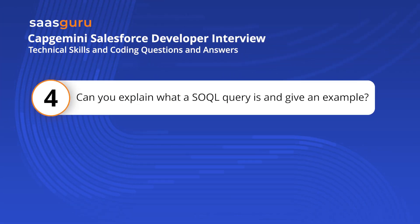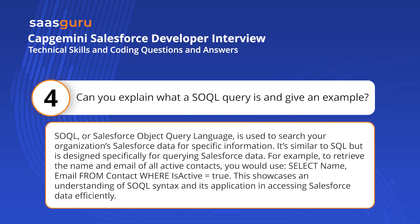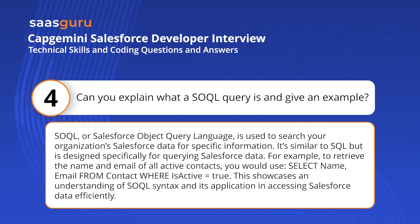Can you explain what a SOQL query is and give an example? SOQL, or Salesforce Object Query Language, is used to search your organization's Salesforce data for specific information. It's similar to SQL but is designed specifically for querying Salesforce data. For example, to retrieve the name and email of all active contacts, you would use: SELECT Name, Email FROM Contact WHERE IsActive = true. This showcases an understanding of SOQL syntax and its application in accessing Salesforce data efficiently.